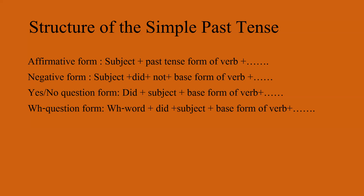The yes/no question form of the simple past tense is used to ask questions that can be answered with a simple yes or no. The structure of the yes/no question form is: did plus subject plus base form of the verb plus object if any. For example, did you finish your homework? Did he play the piano?